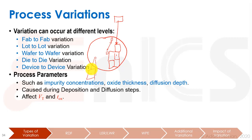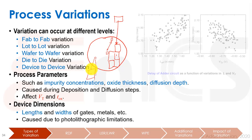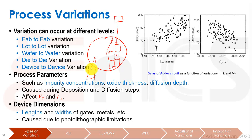There are process parameters that arise due to variation: impurity concentrations, oxide thickness, diffusion depth — these are types of parameters that are going to be affected by variation. They're caused during deposition, diffusion steps, ion implantation, and they affect different parameters, but mainly VT, the threshold voltage of the transistors, and TOx, the thickness of the gate oxide, are the main things affected. The other thing often affected by process variation are the device dimensions — the lengths and widths of the gate, metals, etc. — which change due to photolithographic limitations and differences.